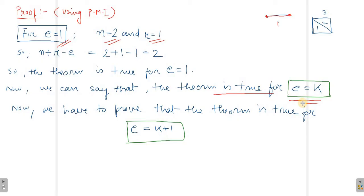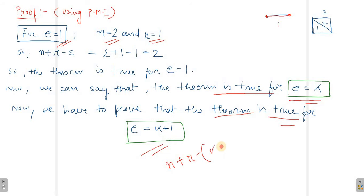Now we have to prove that the theorem is true for E equals K plus 1. That is exactly what we need to prove — we need to prove that N plus R minus (K plus 1) equals 2. If we do this, then Euler's theorem will be proved by PMI, that is the Principle of Mathematical Induction.